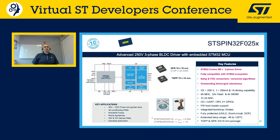Similarly, the STSPIN32F0 250 family has two options in terms of gate current: the 251 provides up to 350mA and the 252 up to 1A, also with two package options available. These drivers target high power tools, garden tools, industrial pumps, and industrial automation.